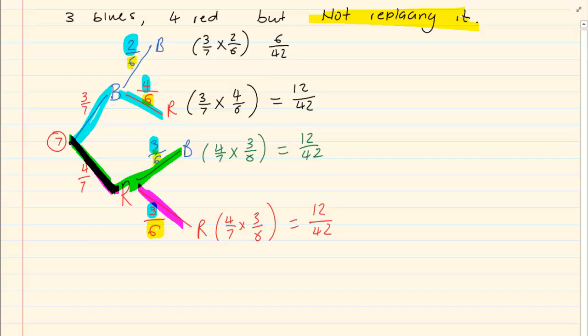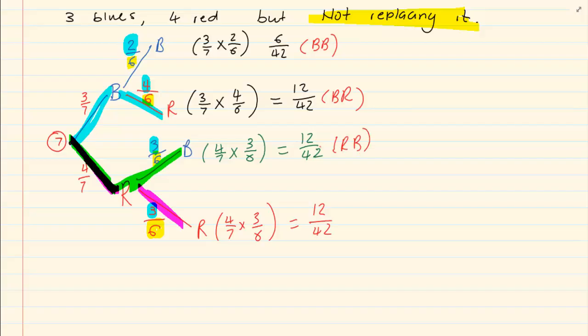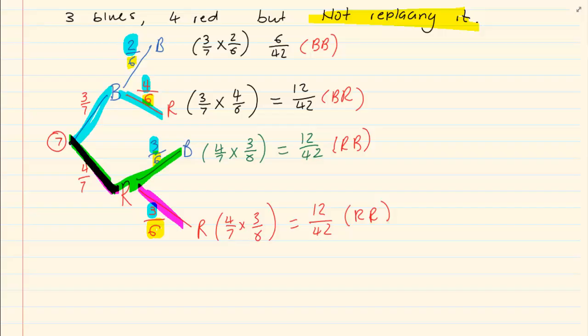So the probability of BB is six over 42, BR is twelve over 42, RB is twelve over 42, and RR is twelve over 42. Can you see how the events changed? When we are doing these events there is a special word for it — you get independent events and you get dependent events. But before we discuss that, you need to understand how we got the probability of these events and you must understand the tree diagram first.